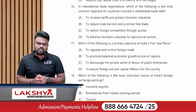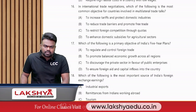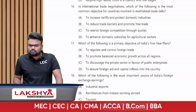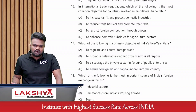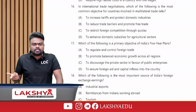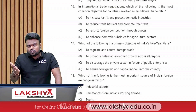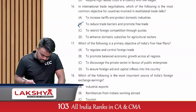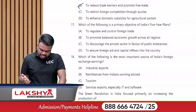In international trade negotiations, which is the most common objective for countries in multilateral trade talks? The options include: increase tariffs, reduce barriers and promote free trade, restrict foreign competition through quotas, or enhance domestic supply for agriculture. Trade negotiations aim to reduce barriers — so the answer is option B, to reduce barriers and promote free trade.